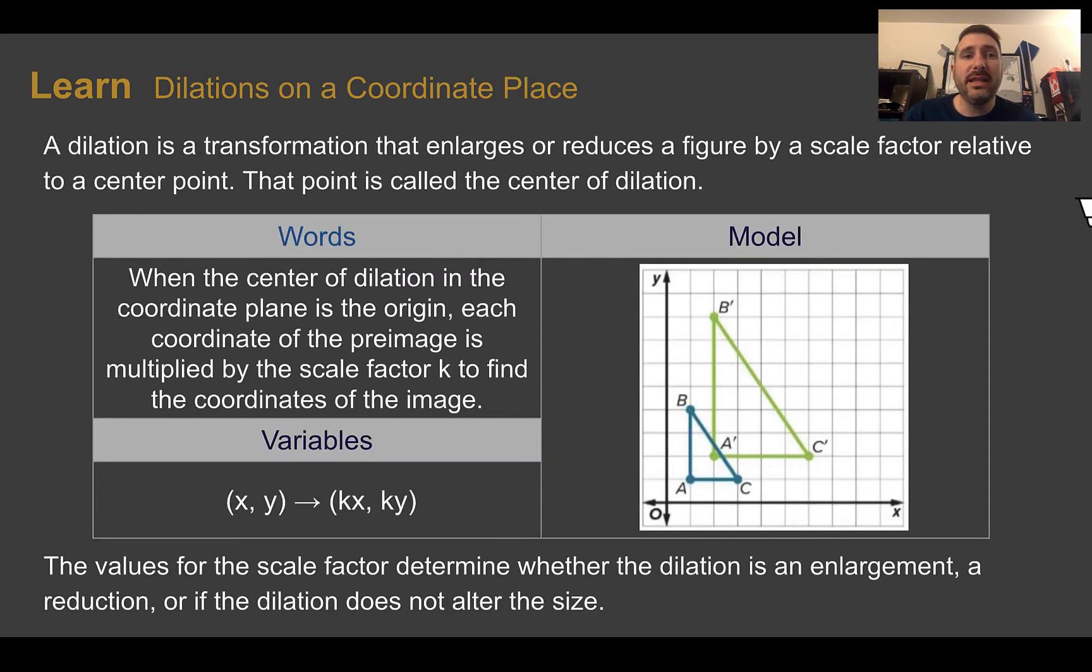When we're talking about dilations as a transformation, it's going to enlarge or reduce a figure by a scale factor, but relative to a center point. That point is called the center of dilation, similar to in previous lessons where we had the center of rotation. The center of dilation is just where everything is enlarged or reduced from. Here we're going to look at when it is from the origin, 0, 0.